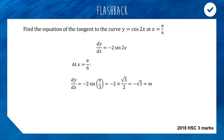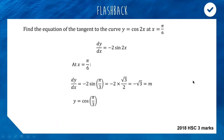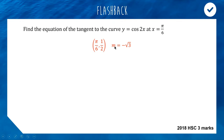Now we have a gradient, but we also need a point on the line so we can use the point-gradient formula. The question only gave us the x value, so to find the y value we substitute into the original function: cos(2 × π/6) = cos(π/3) = cos(60°) = 1/2. Putting that all together, we have gradient negative √3 and point (π/6, 1/2). Now we use the point-gradient formula and substitute in our information.